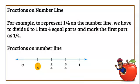For example, to represent 1 quarter on the number line, we have to divide 0 to 1 into 4 equal parts and mark the first part as 1 quarter.